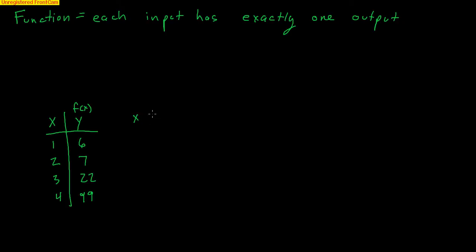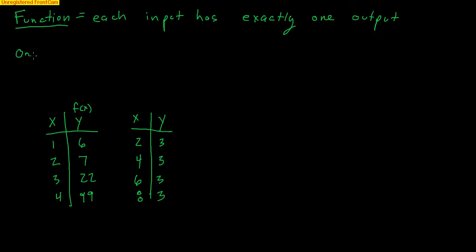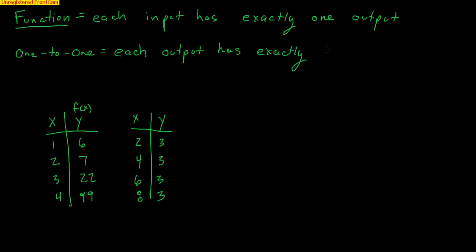Let's look at another example. Inputs 2, 4, 6, 8 all go to 3. As long as each input doesn't go anywhere else, it's still a function — multiple inputs can share the same output. This brings up a new definition: the 1-to-1 function. A 1-to-1 function is the complete opposite of the definition of a function — it says each output has exactly one input.